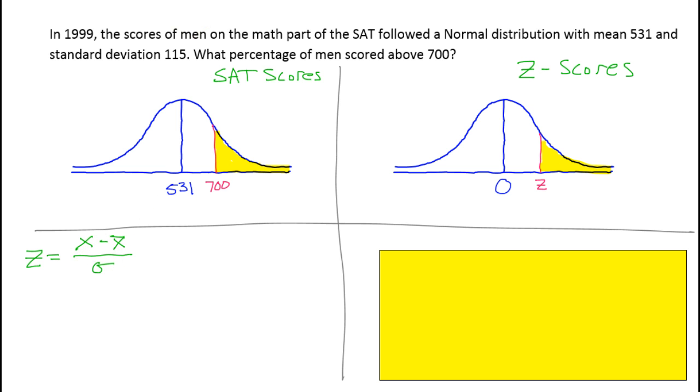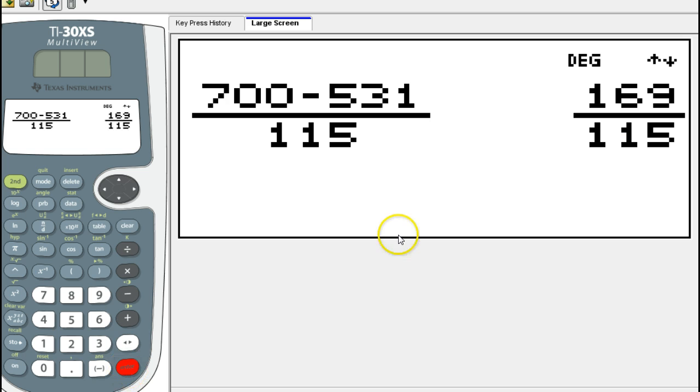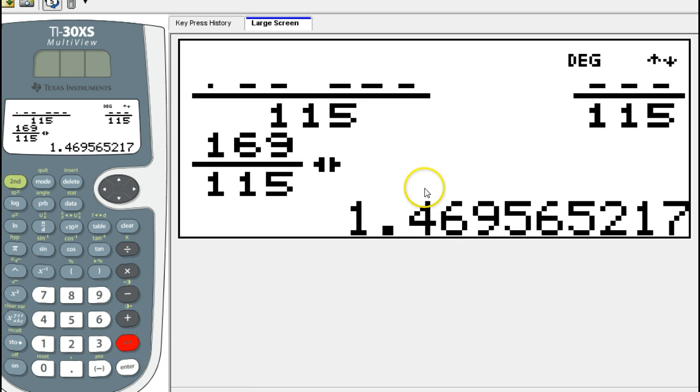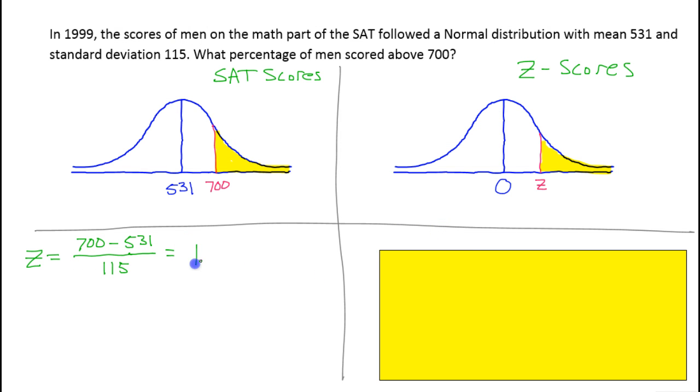I'm just going to replace these values. We're going to do the 700 minus the mean, which is 531, divided by the standard deviation, which is 115. I'm just going to run that through my calculator real quick. We need decimals, so I'm going to toggle that. We're going to do two decimal places. It's very important that you round properly to the hundredths place. I am not going to say 1.46. The next number is a 9, so I need to round up. If the next number is 5 or higher, you've got to round up. This is going to round to 1.47.